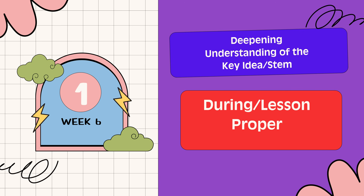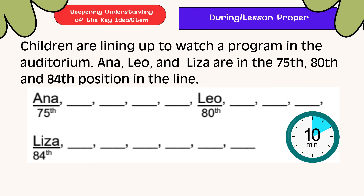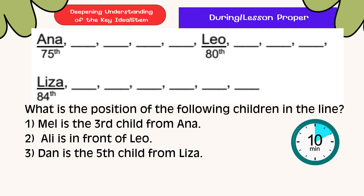For deepening understanding: children are lining up to watch a program in the auditorium. Anna, Leo, and Lisa are in the 75th, 80th, and 84th positions in the line. The questions are: Number one, Mel is the third child from Anna. Number two, Ali is in front of Leo. And number three, Dan is the fifth child from Lisa. You will be given ten minutes to answer these questions.